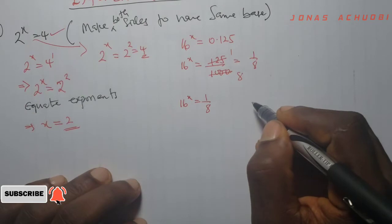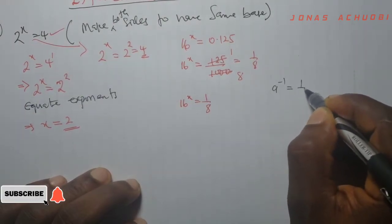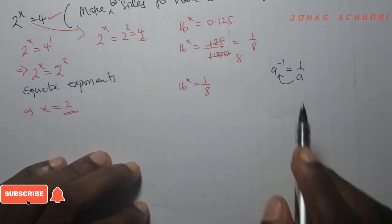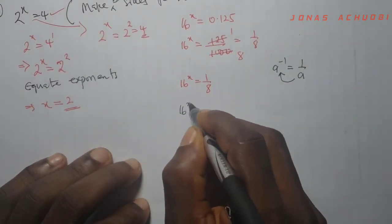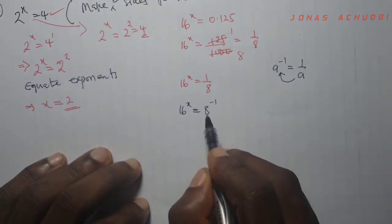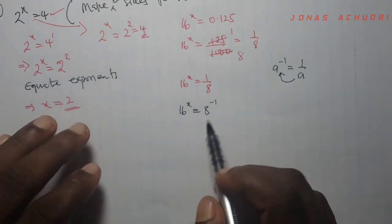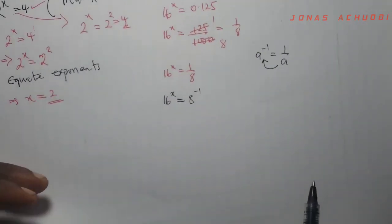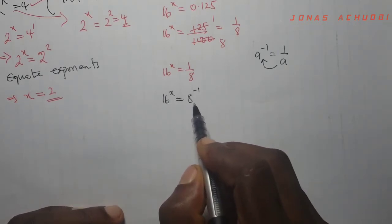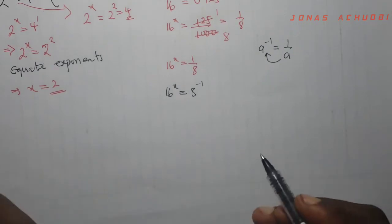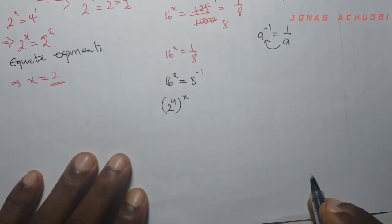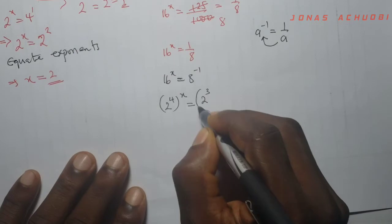Let us recall from our indices that a raised to the power minus 1 is equal to 1 over a, which means that 1 over a can be written as a raised to the power minus 1. Applying that here, the left hand side is 16 raised to the power x, and I can write the right hand side as 8 raised to the power minus 1. So the base here is 8 and the base here is 16 — different bases. So can I make them the same base? The answer again is yes.